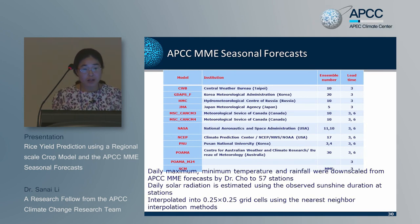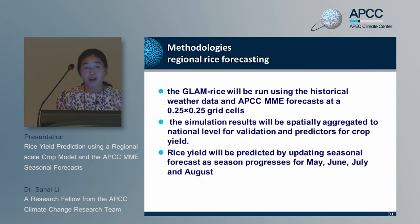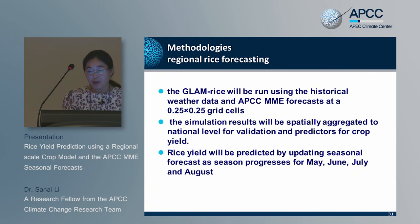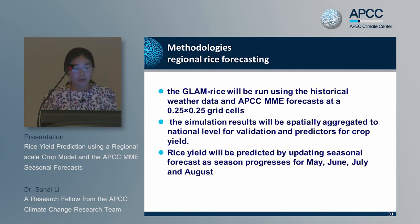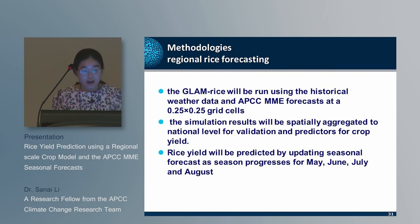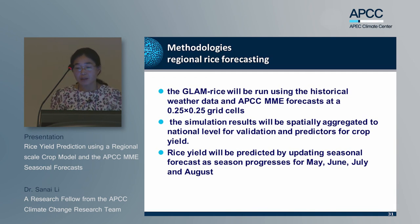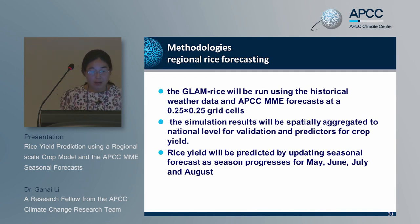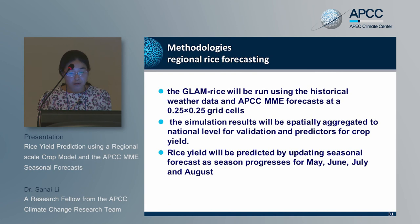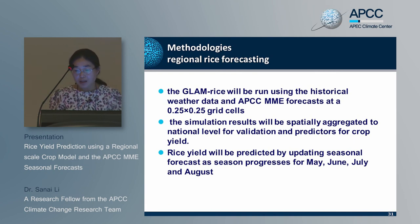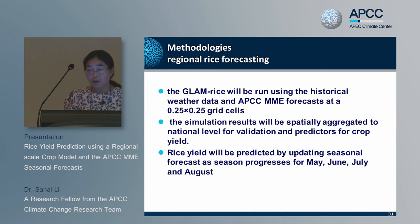For the regional rice forecasting: GLAM Rice was run with historical observation data and APCC MME forecast data at 0.25 by 0.25 degree scale. Simulated results were spatially aggregated to the national level for validation and crop yield prediction. Finally, the rice yield was predicted by updating the seasonal forecast with observations as they became available from May, June, July, and August.